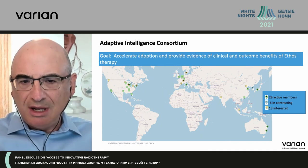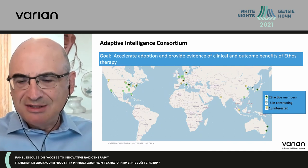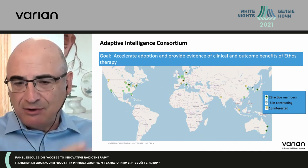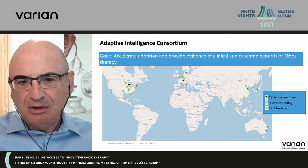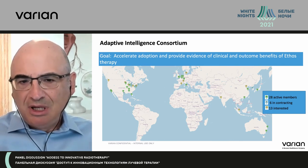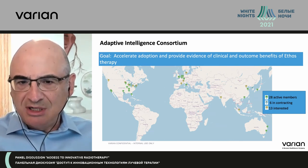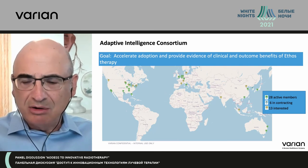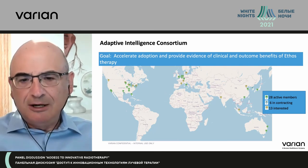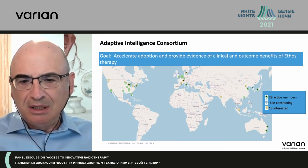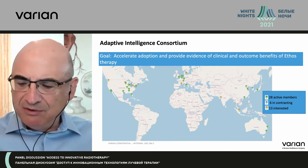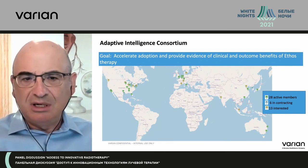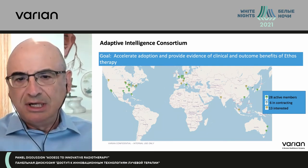Varian will have about six clinical trials, like pharmaceutical company trials, testing adaptive in a number of diseases: lung, prostate, bladder, cervix, pancreas. A number of investigator-initiated clinical trials have already started in this space.